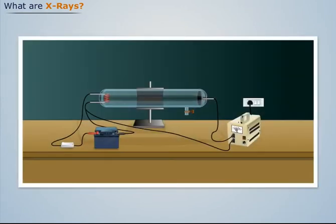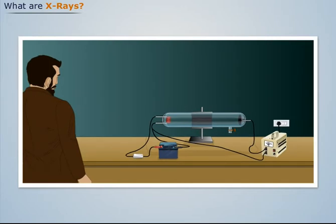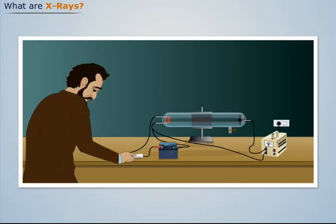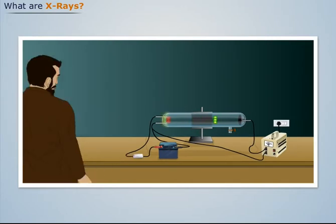While studying the phenomena of discharge of electricity through the rarefied gases, Roentgen noticed that the glass wall behind the cathode glowed.